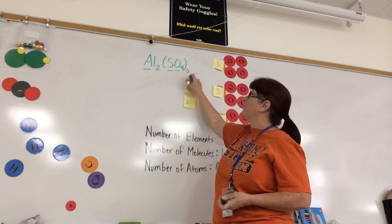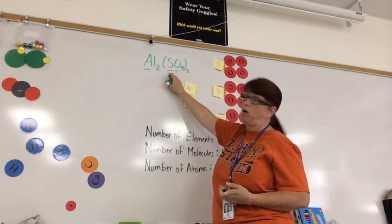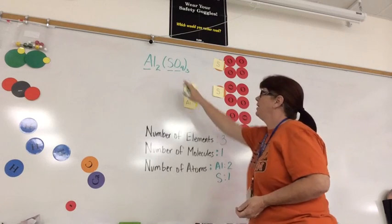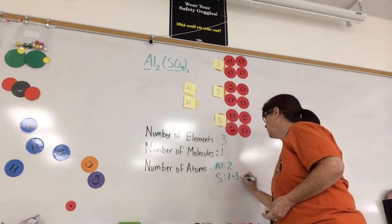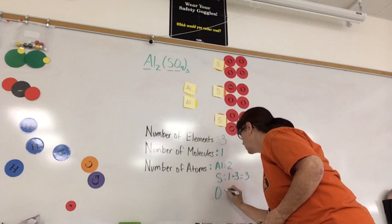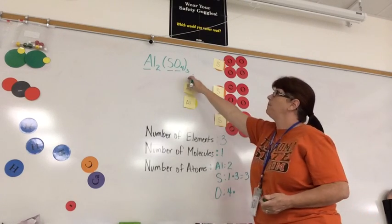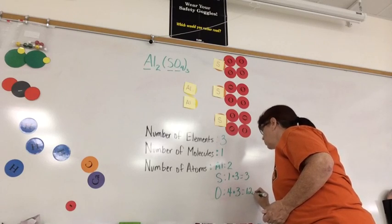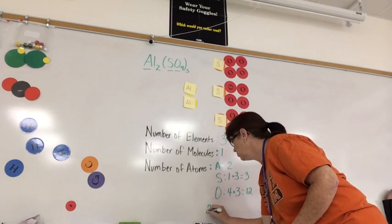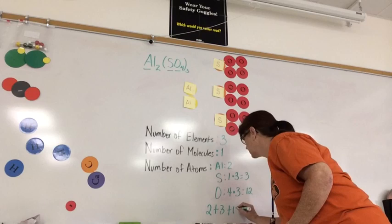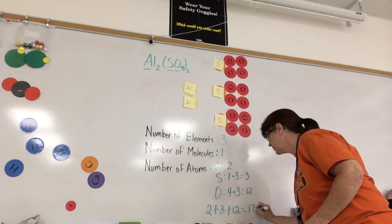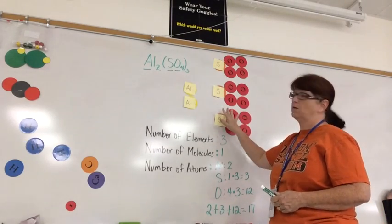Using the distributed property in math, I'm going to multiply the 3 times my 1 after the S to figure out the number of sulfurs. So sulfur equals 1 times 3, which equals 3. My oxygens, I have 4, and I have to multiply them by 3 to get a total of 12. So my total atoms is 2 plus 3 plus 12, which equals 12 plus 3 is 15, plus 2 is a total of 17. If I count the number of circles up here, I should have 17.